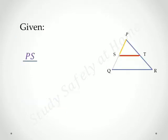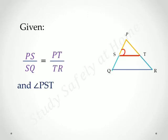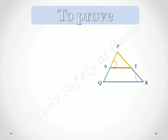What has been given? PS by SQ is equal to PT by TR and angle PST is equal to angle PRQ. Observe the angles.